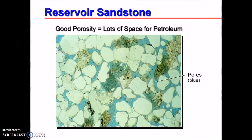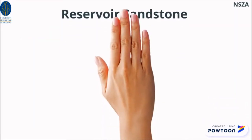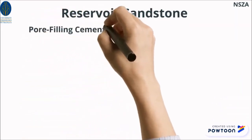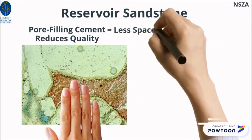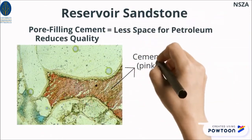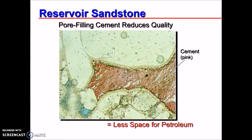You can see here the reservoir rock of sandstone with good porosity — lots of space for petroleum to be preserved within the porous rock. Meanwhile, this one has had its porosity cemented, so it is obviously very poor in porosity and permeability for petroleum to accumulate.